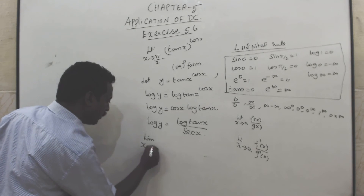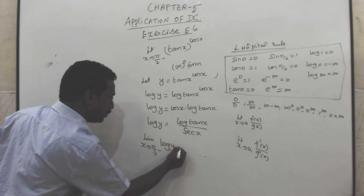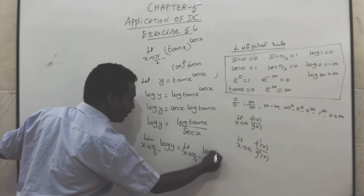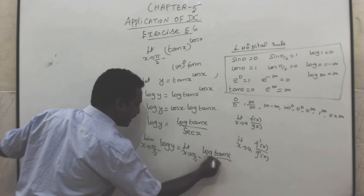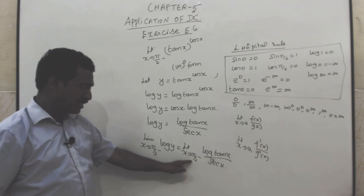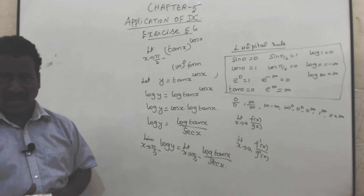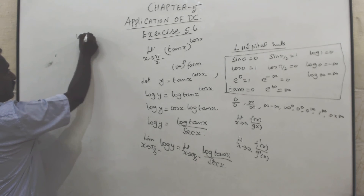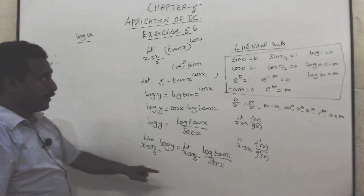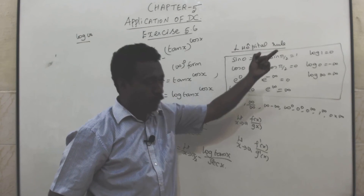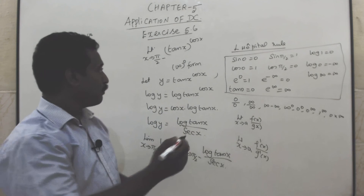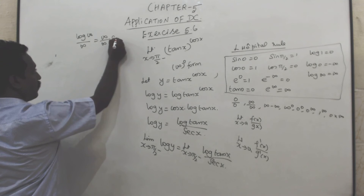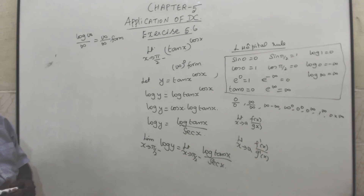Taking limits: limit x tends to π/2 minus of log y equals limit x tends to π/2 minus of log(tan x) divided by sec x. Substituting the limit: log tan(π/2) is log infinity, and sec(π/2) is the reciprocal of cos(π/2) which is the reciprocal of 0, giving infinity. So we have the infinity by infinity form.